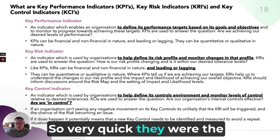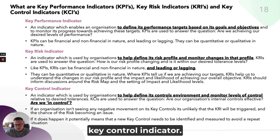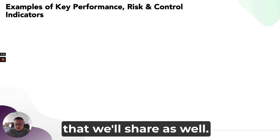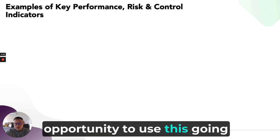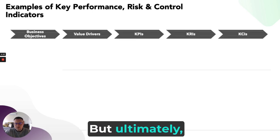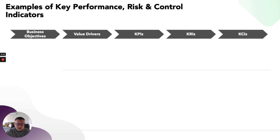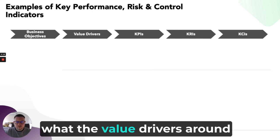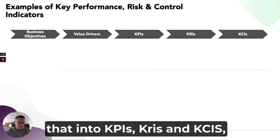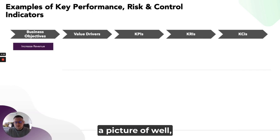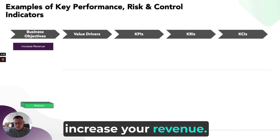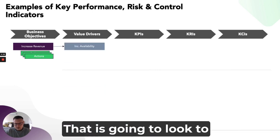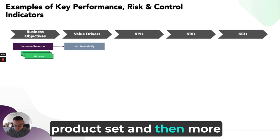So those were the narratives around Key Performance Indicator, Key Risk Indicator and Key Control Indicator. How do we use them? There's a template at the back of the pack that gives you an opportunity to use this in your own planning. Taking the flow from business objectives into value drivers, then into KPIs, KRIs and KCIs, you start to build a picture. For example, if your business objective is to increase revenue, there are a number of actions you'd take — such as looking to increase the availability of your product set.